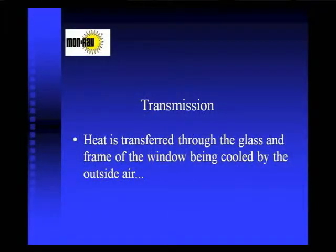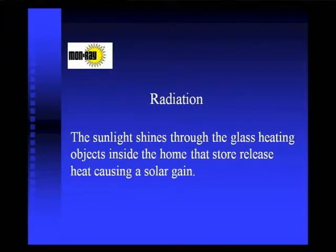Transmission is the heat that literally goes through the glass from inside the house to outside through convection — the cooling of the glass surface outside, or in the summertime, the cooling energy loss due to the glass heating up the cool air inside. Radiation is actually a good thing. That's the warm light coming in through the window that our dogs and cats like to lay on the floor in front of.